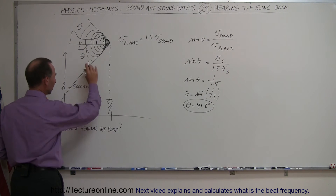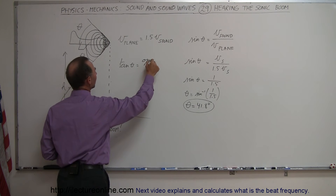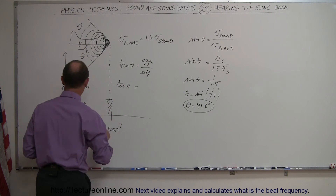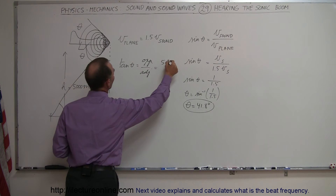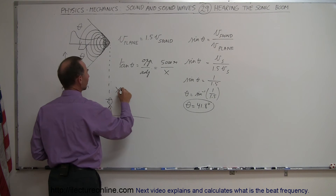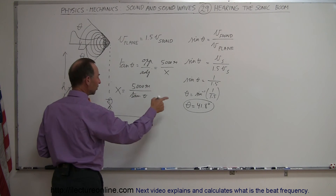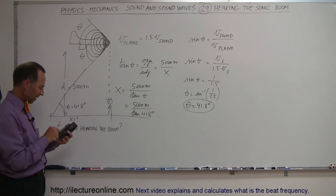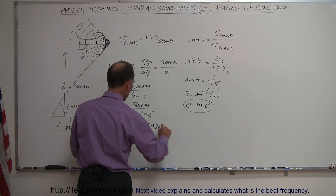So x equals question mark. Looking at the triangle, this is the adjacent side to the angle. The definition of the tangent: the tangent of theta is equal to the opposite side divided by the adjacent side. The opposite side is 5,000 meters, and x is the adjacent side. So x is equal to 5,000 meters divided by the tangent of theta. Since theta is 41.8 degrees, x equals 5,000 divided by the tangent of 41.8 degrees, which gives us x equals 5,592 meters.